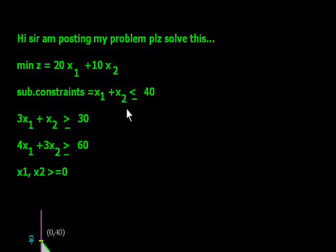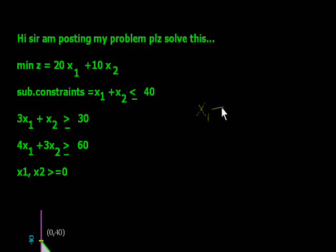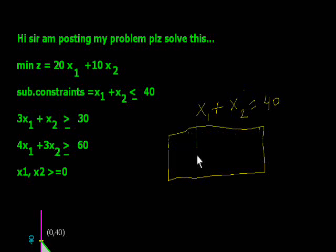First of all, suppose in this condition X1 + X2 ≤ 40, we set it equal: X1 + X2 = 40. So we will make a table. If X1 is 0, then X2 is 40. If X2 is 0, then X1 is 40.